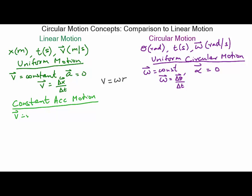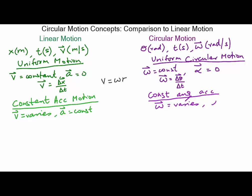Then we get to constant acceleration motion, where velocity changes at a constant rate — velocity varies and acceleration is a constant value. The angular equivalent is constant angular acceleration, where omega varies and alpha, the angular acceleration, is a constant. In this case the object is no longer sweeping equal angles in equal amounts of time. Acceleration is defined as change in velocity over change in time, and angular acceleration is change in angular velocity over change in time.